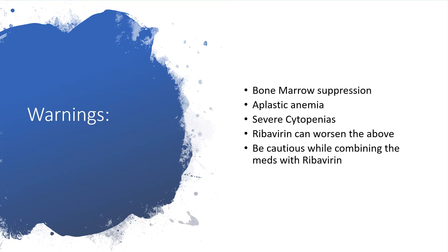There is a likelihood of bone marrow suppression — aplastic anemia, severe cytopenias, increased infection, bleeding, and so on. Ribavirin can worsen these conditions above, so be cautious when combining PEG interferon with ribavirin.